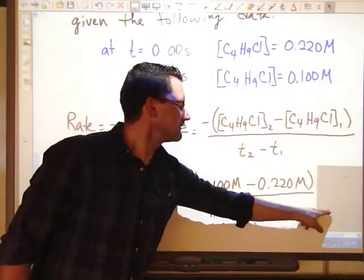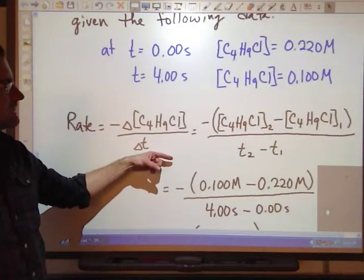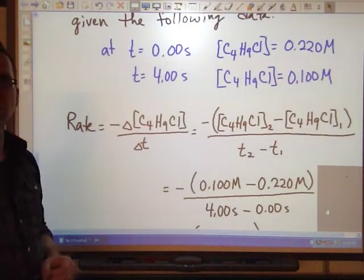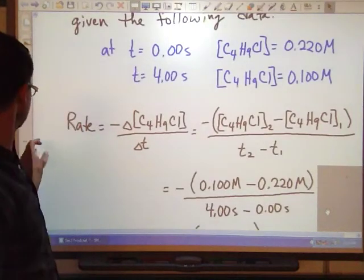I have my final amount of C4H9Cl is 0.100 molar. I initially started off with 0.220. Put them in the right areas there, and then four seconds minus zero seconds.